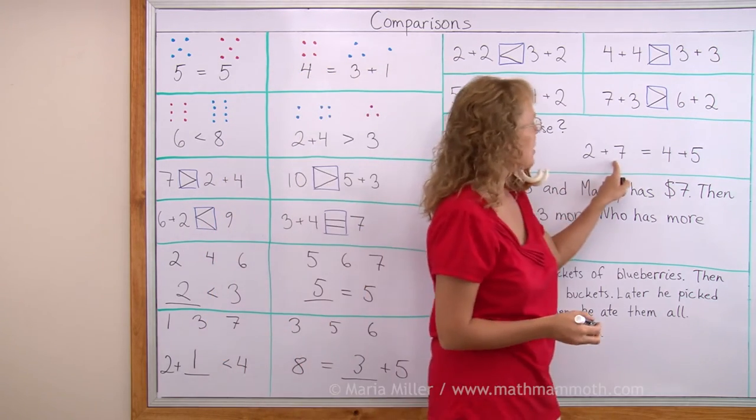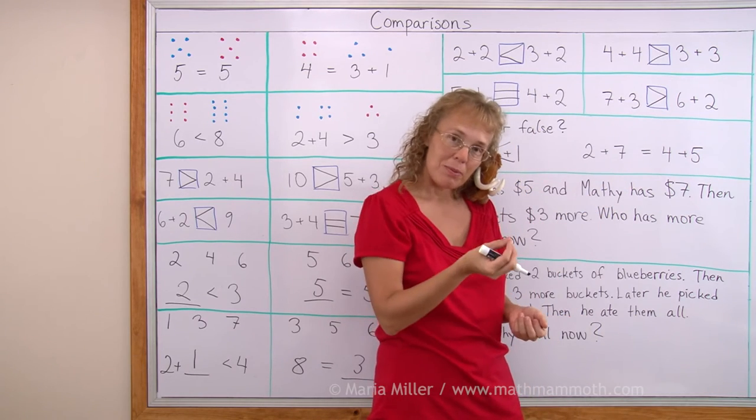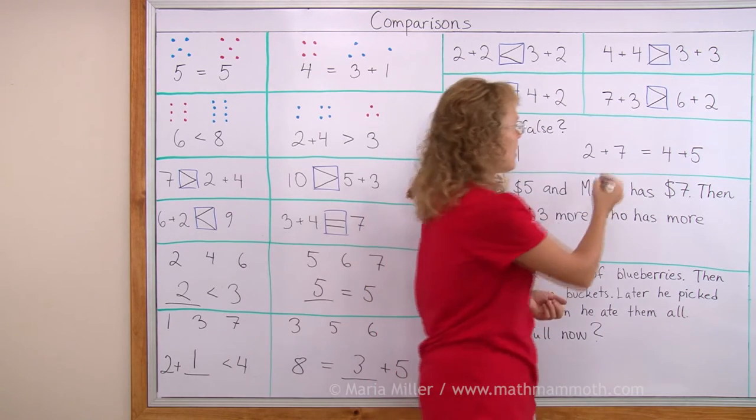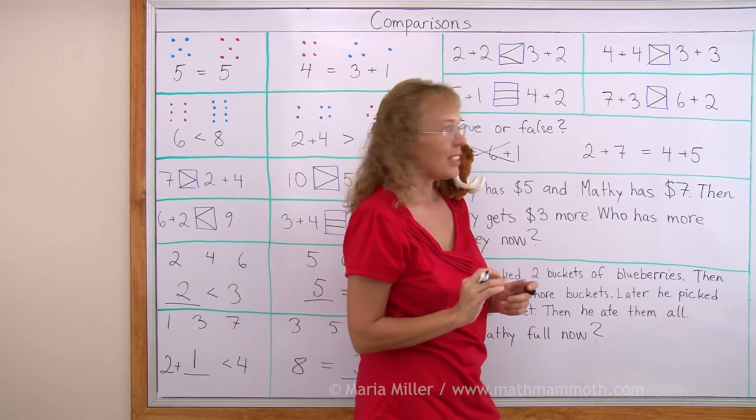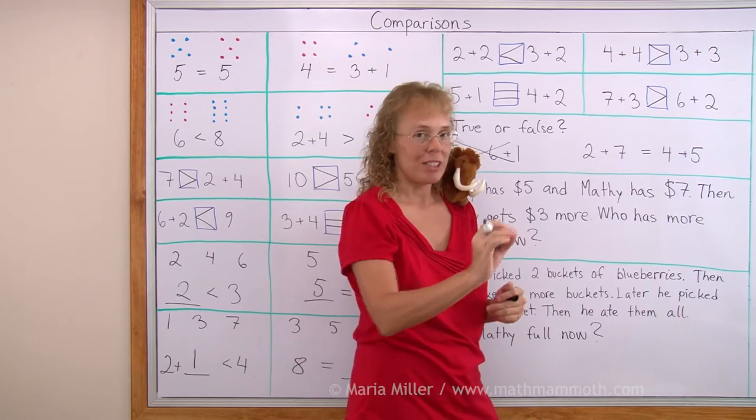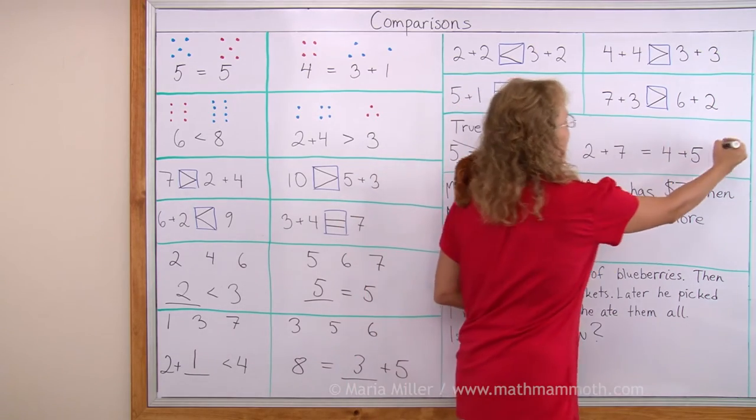2 plus 7 or 7 plus 2? 9. Yeah, this is 9. 4 plus 5 is also 9. It is just 1 less than 5 plus 5. So this is correct. This is true.